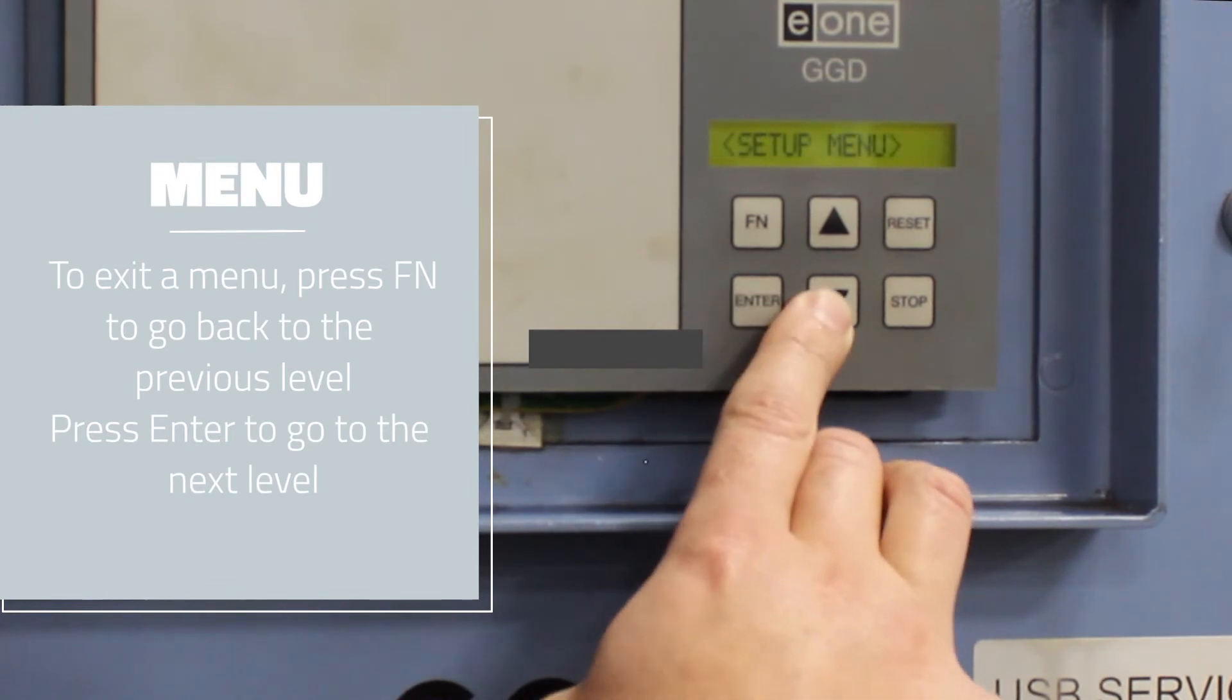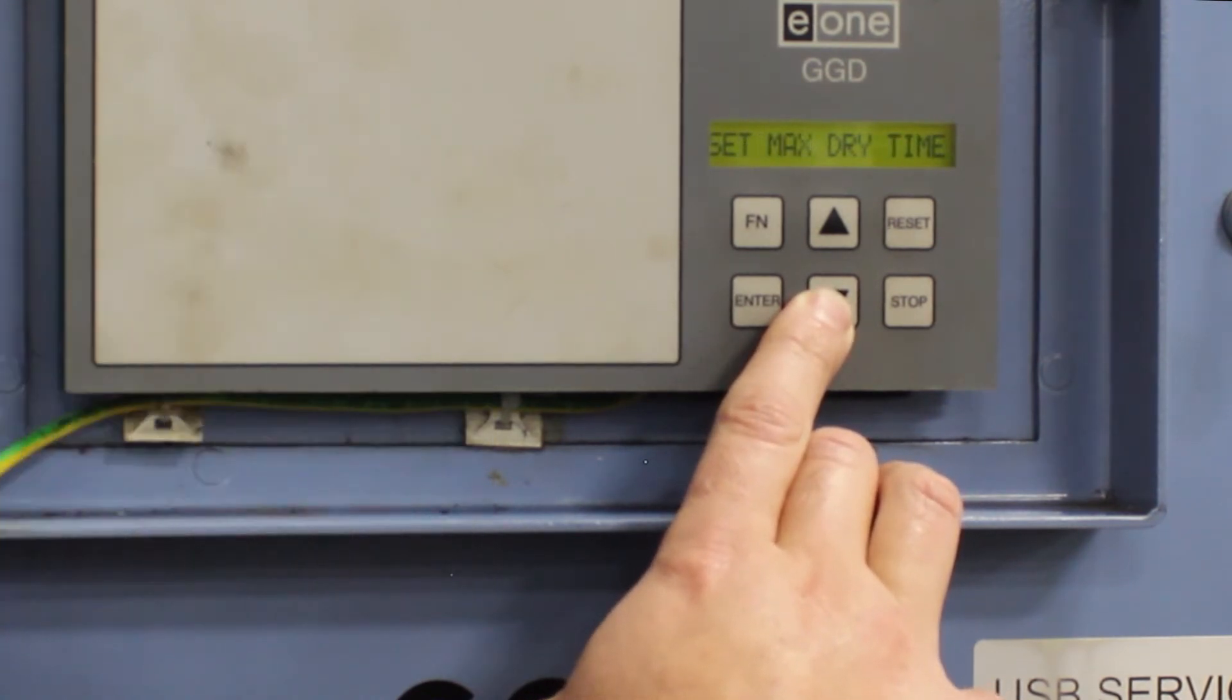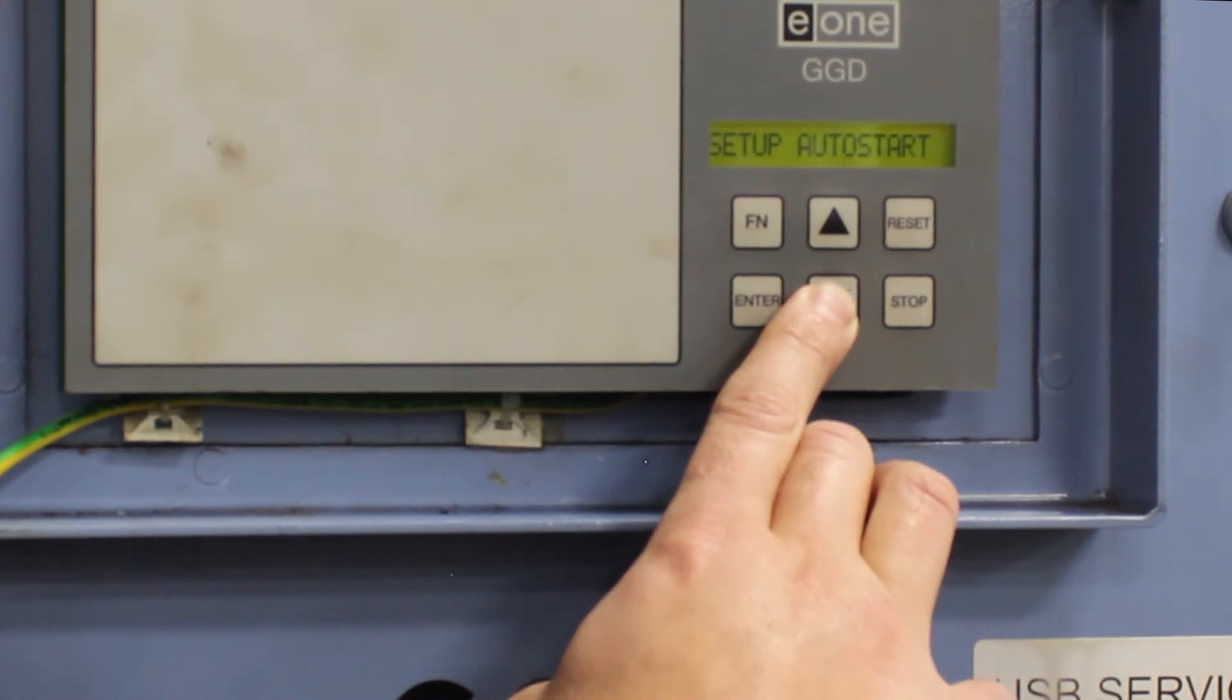Setup menu: Setup Sensors, Dew Point Alarm, Desired Dew Point, Minimum Dry Time, Maximum Dry Time, Column Usage, Auto Start, Actuator Control, Regen Control, Voltage, Degrees, High Flow Limit, Low Flow Limit, the Advanced menu, and the Scroll Features.